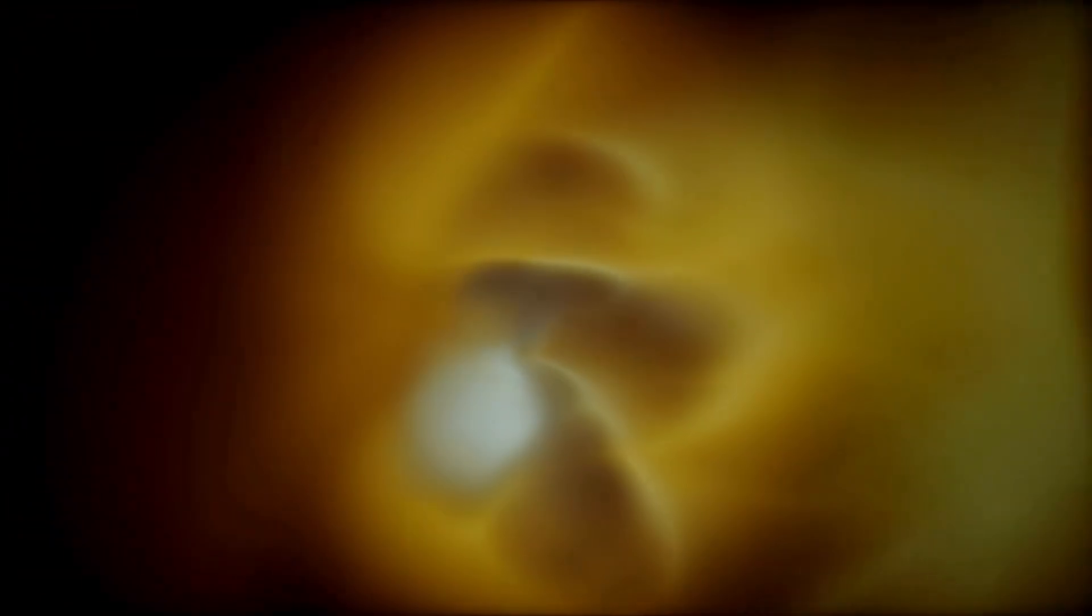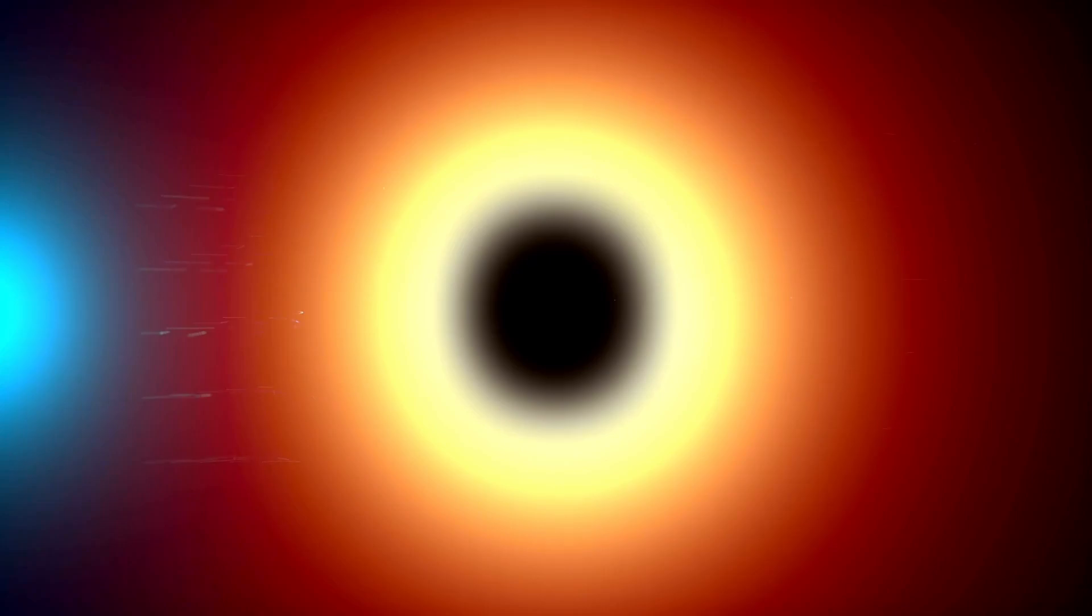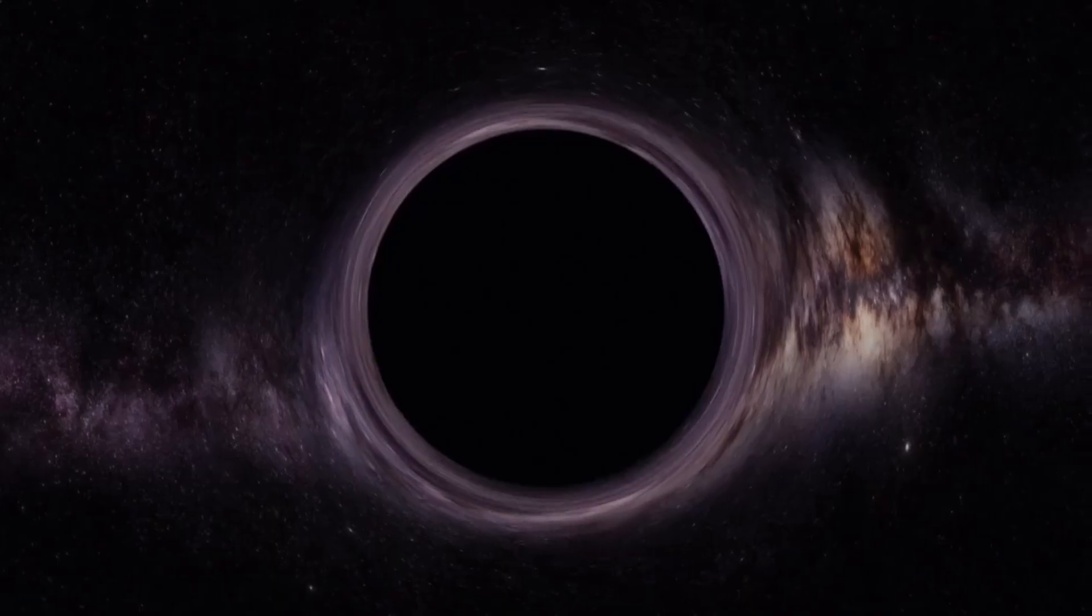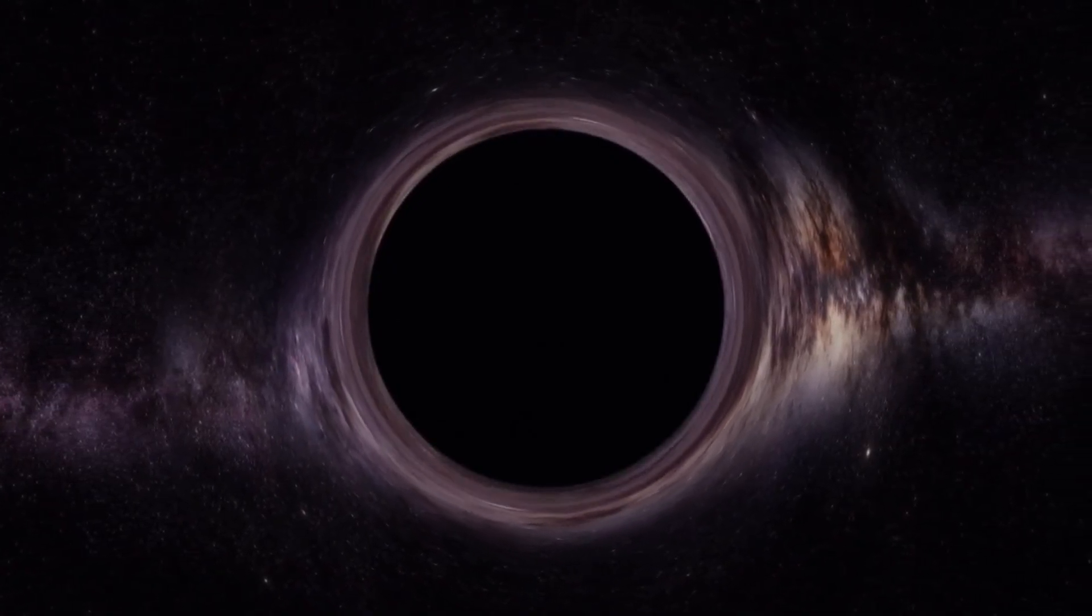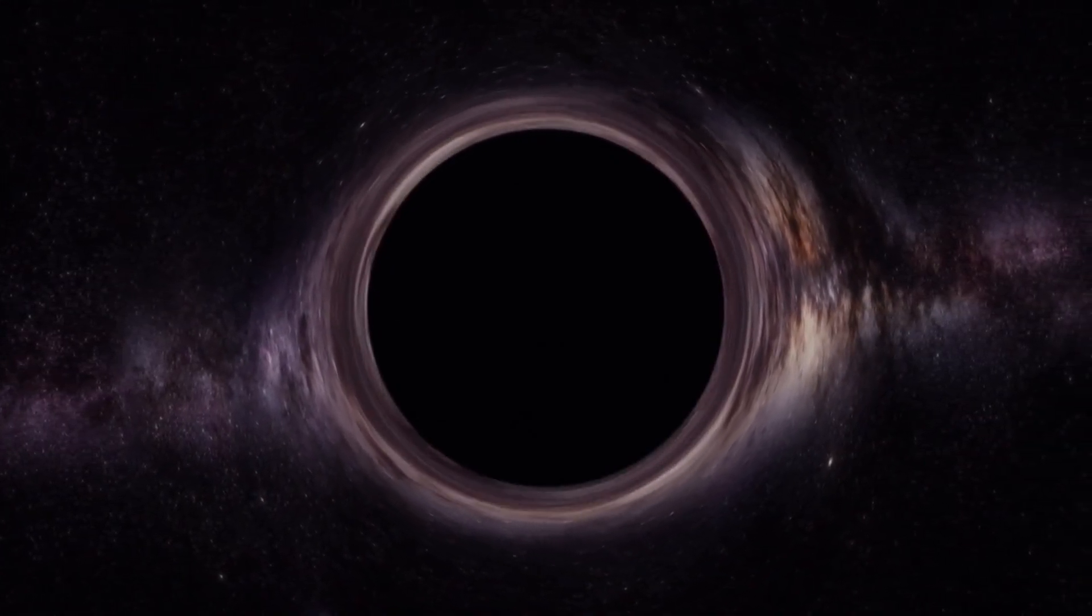Stellar black holes, the most commonly observed type, form through gravitational collapse at the end of a massive star's life. Once a star exhausts its nuclear fuel, the outward pressure generated by nuclear reactions no longer counters gravity, causing the star to collapse under its own weight and form a stellar black hole.